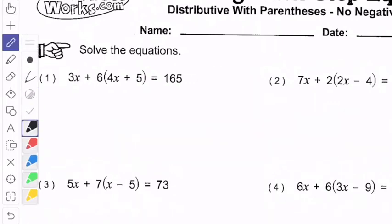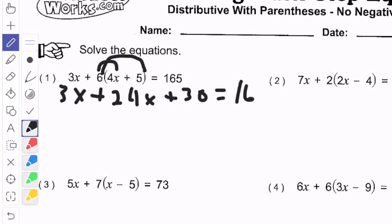So I'm going to keep 3x. I'm going to now add 6 times 4x is 24x plus 6 times 5 is 30. And that's going to equal 165. All right. Combine like terms.